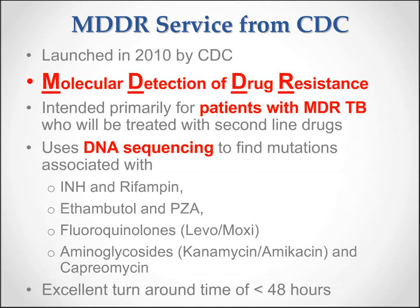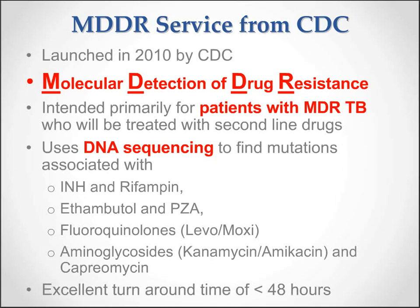Since 2010, the Centers for Disease Control has had an MDDR service — Molecular Detection of Drug Resistance — available to us. It is intended primarily for patients with MDR-TB who will be treated with second-line drugs. It uses DNA sequencing to find mutations associated with INH and rifampin, ethambutol and pyrazinamide, fluoroquinolones such as levofloxacin and moxifloxacin, aminoglycosides, and capreomycin. It has an excellent turnaround of less than 48 hours. In years past it was only available for positive cultures, but within the past year it has also become available for smear-positive specimens that are also NAT-positive.